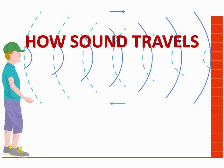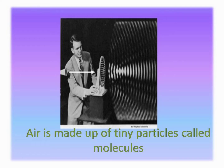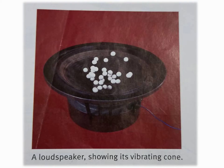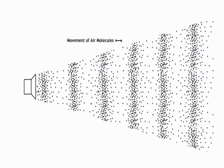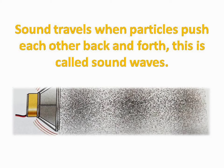Let us now try to explain how sound travels. We already know that air is made up of tiny particles called molecules. When a loudspeaker makes a sound, its cone vibrates back and forth. This pushes the air molecules next to the cone so that they move back and forth with the same frequency. These molecules then push on the next layer of molecules so that they also start to vibrate, and those molecules push on to the next ones, and so on. Sound travels when particles push each other back and forth — this is called a sound wave.